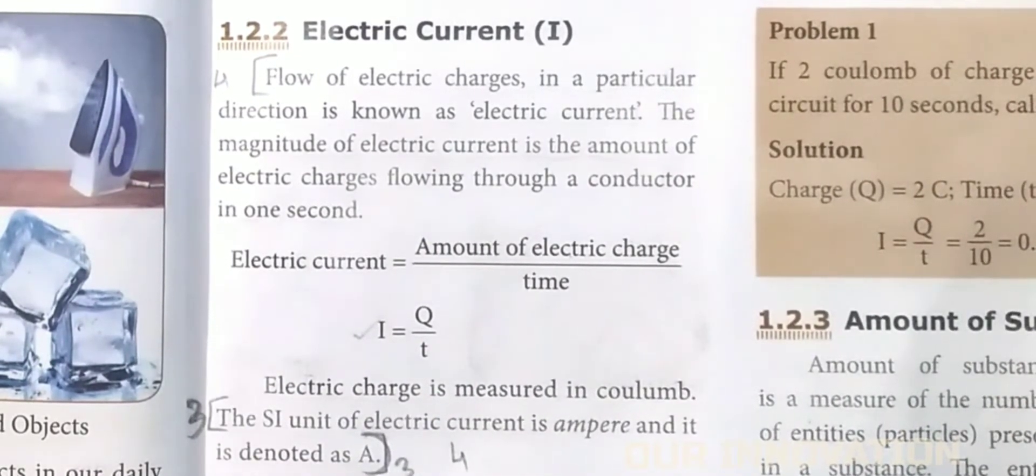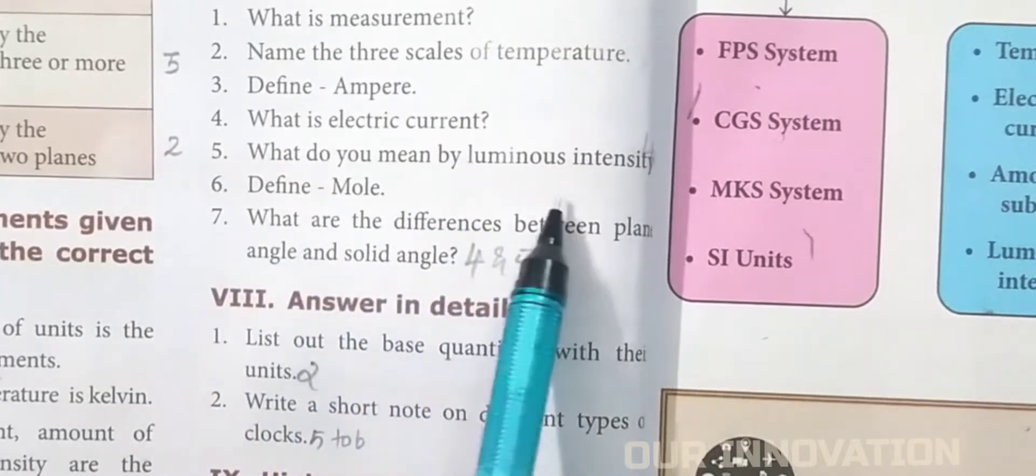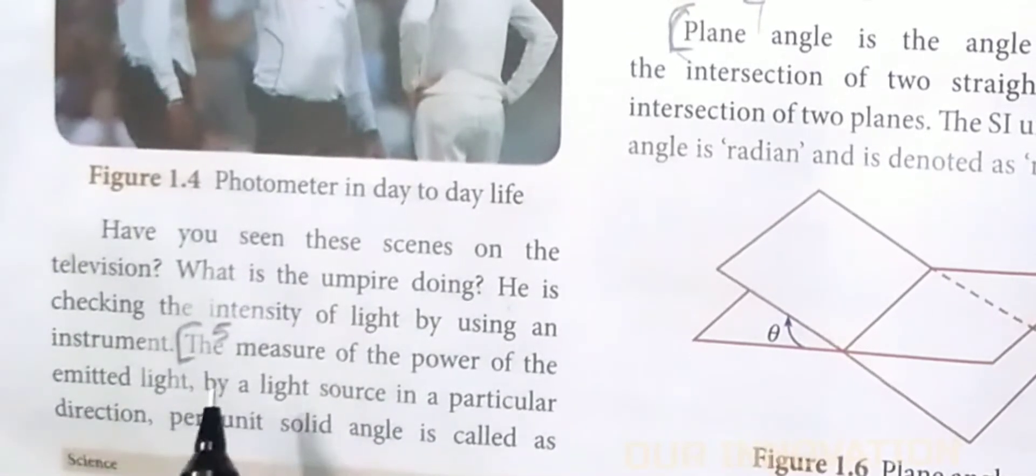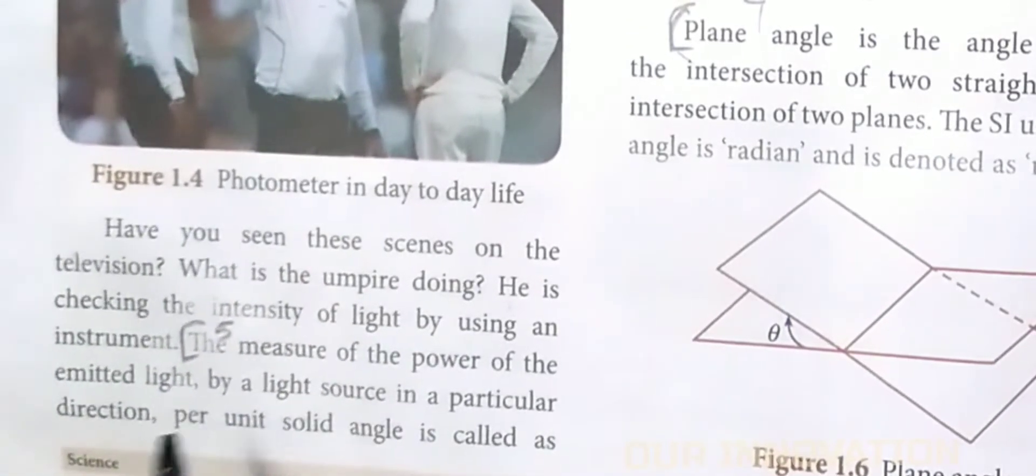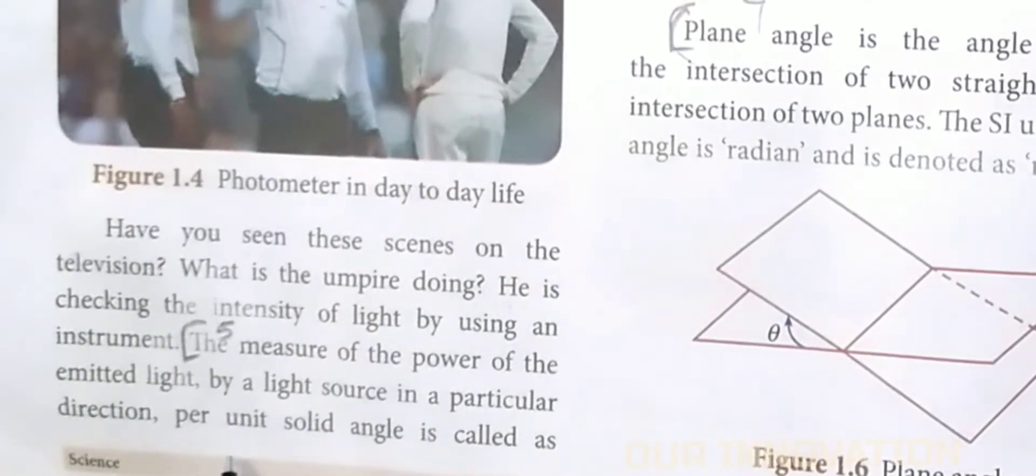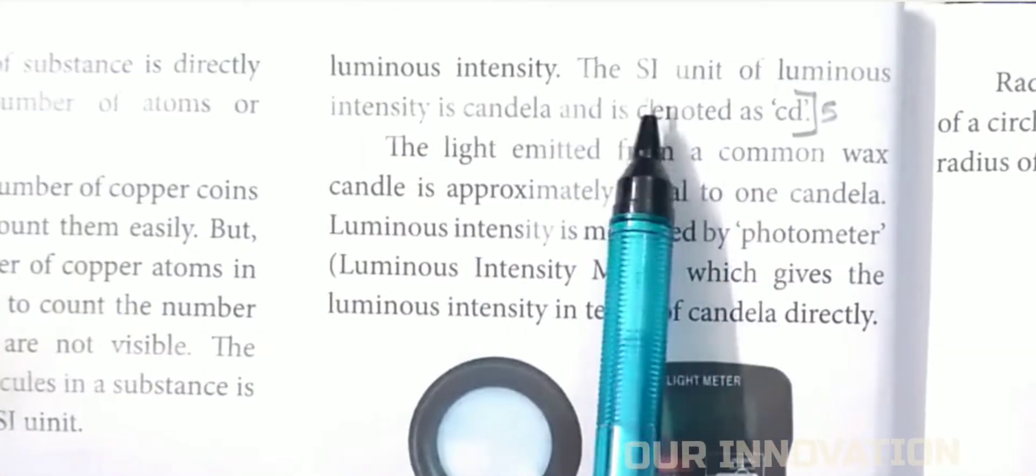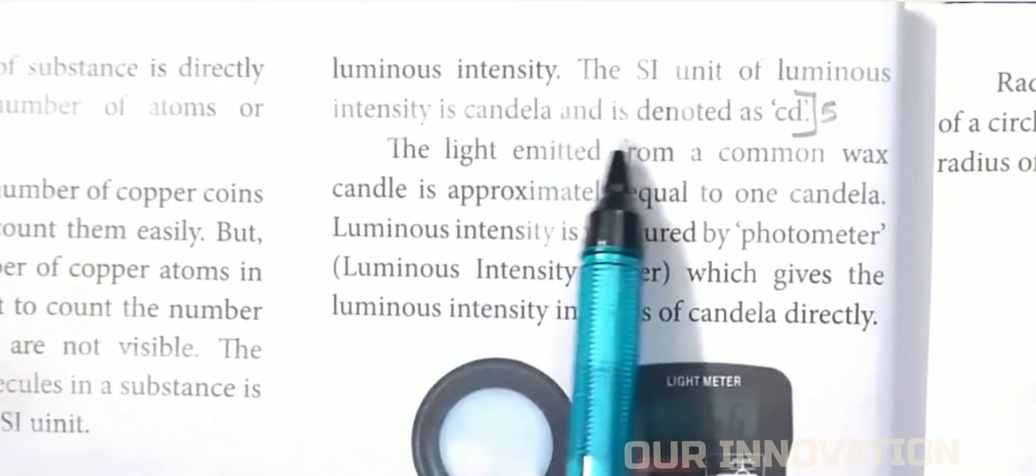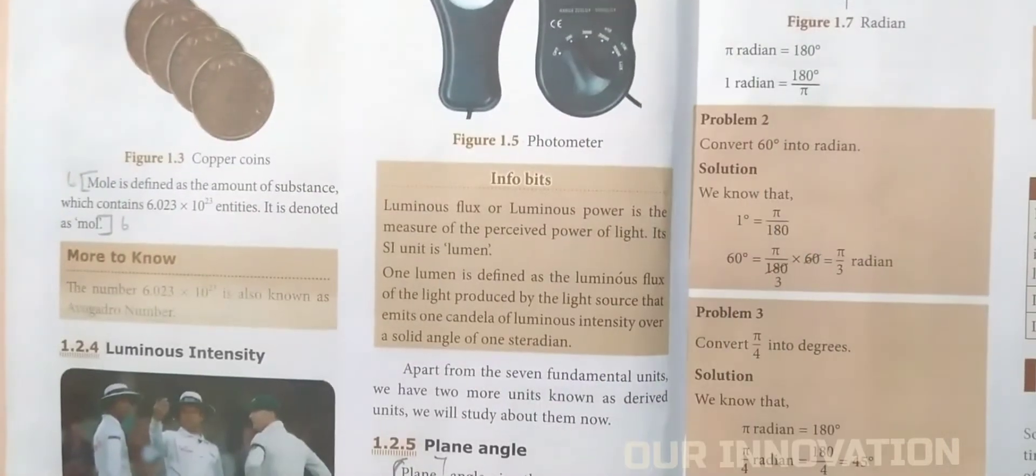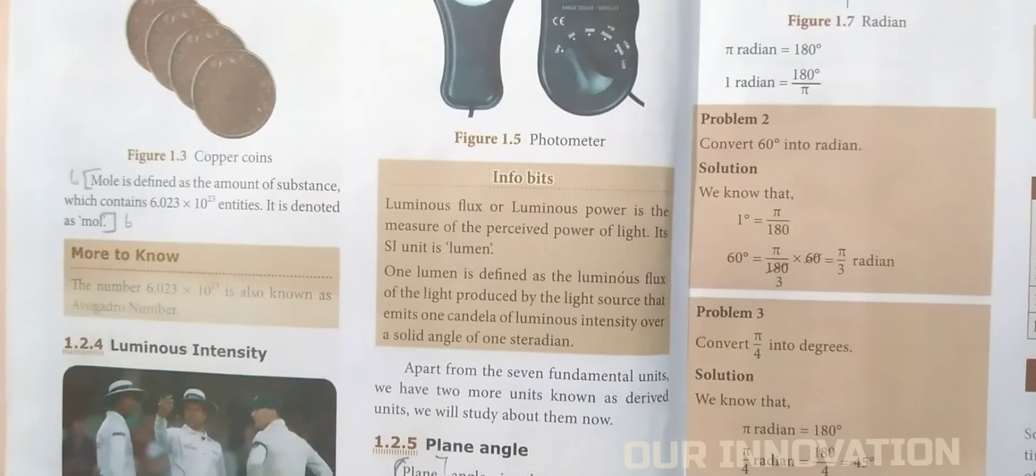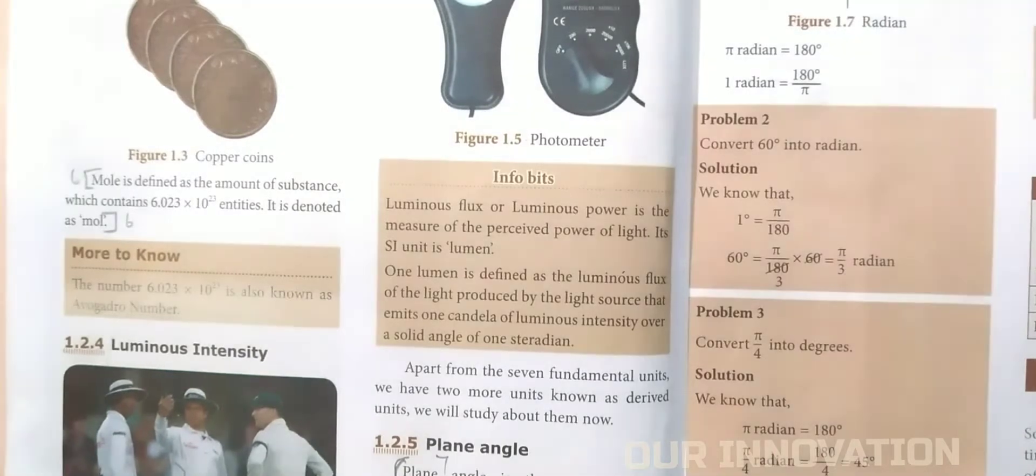What do you mean by luminous intensity? Page number 4: The measure of the power of the emitted light by a light source in a particular direction per unit solid angle is called luminous intensity. The SI unit of luminous intensity is candela and it is denoted as cd.